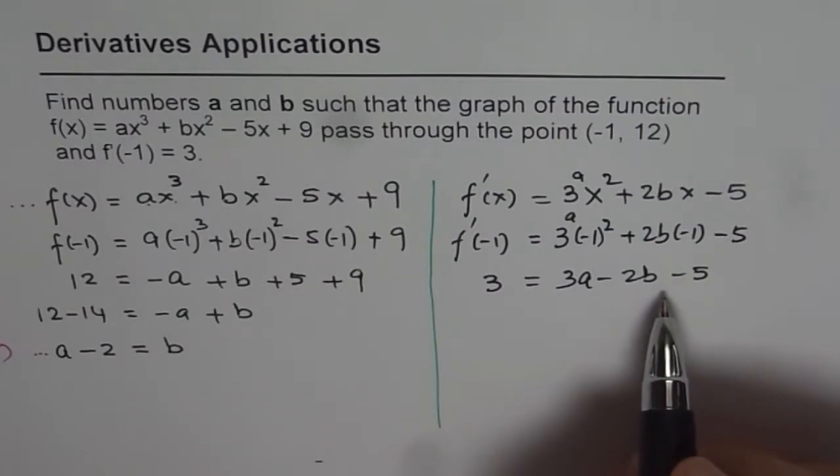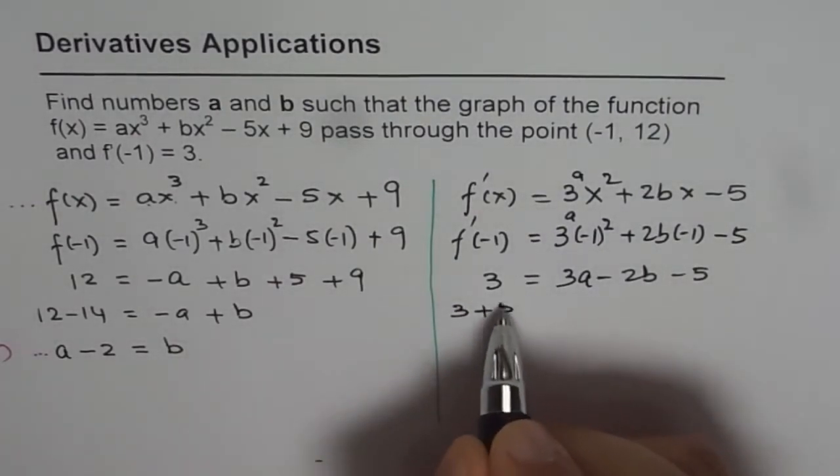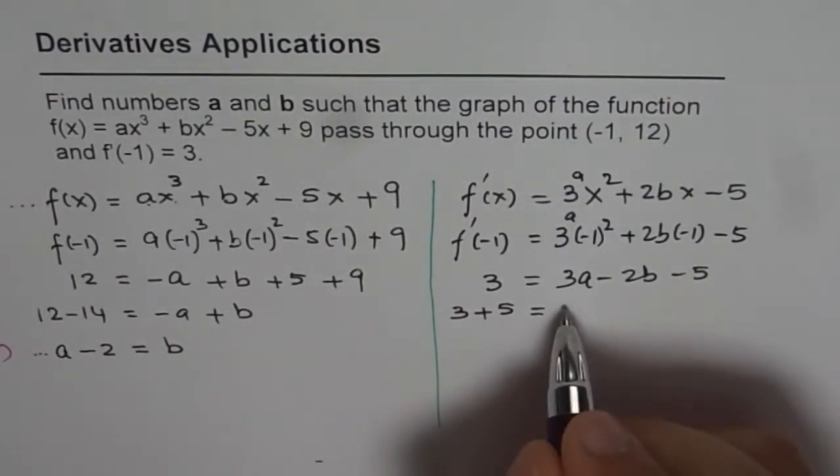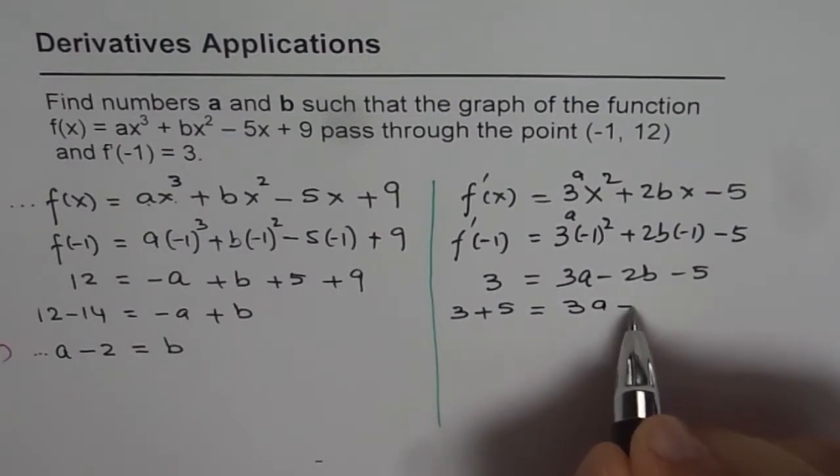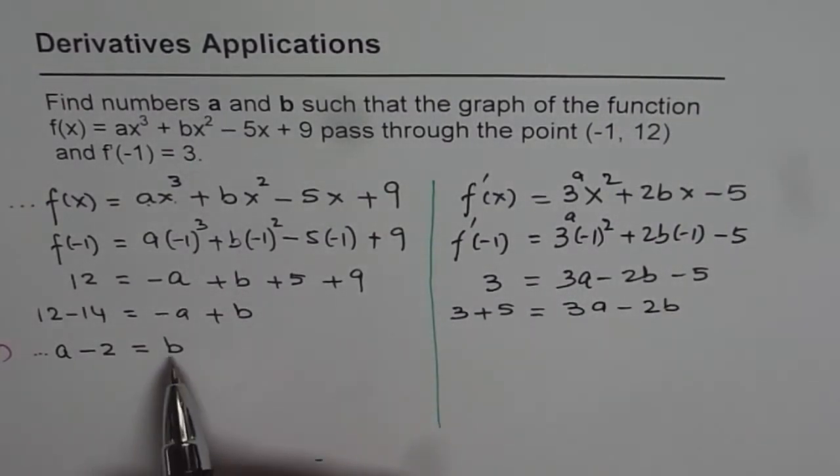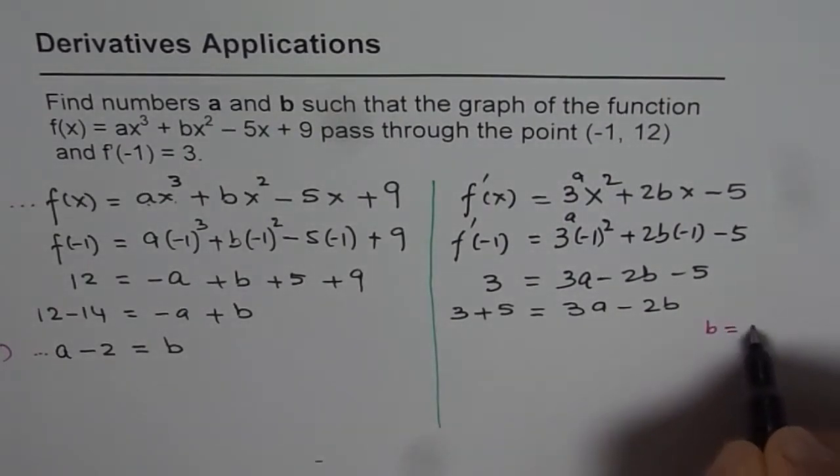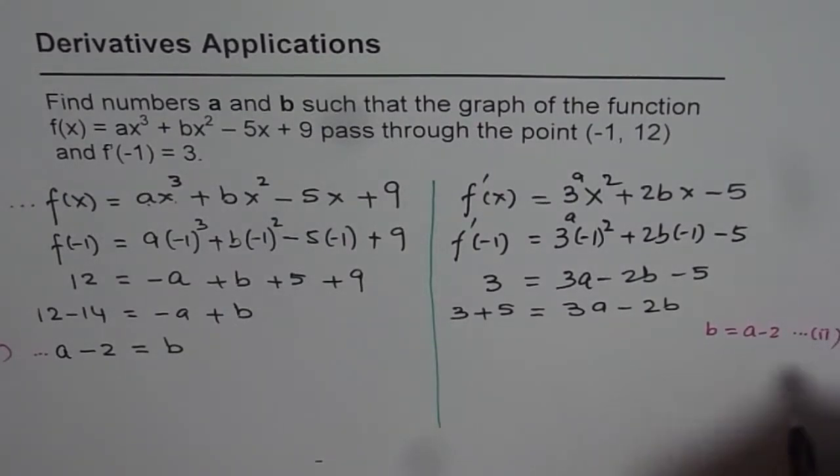So that relates again a and b. So from here, what we get is, we can bring 5 on this side, so it becomes 3 + 5 equals 3a - 2b. Now from equation number 1, we know b is a - 2. So what we will do is, we will substitute a - 2 here. So since we know that b equals a - 2, that is our equation number 2, we will substitute this value.